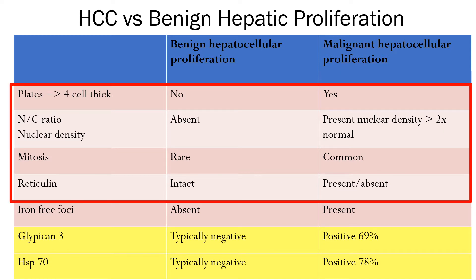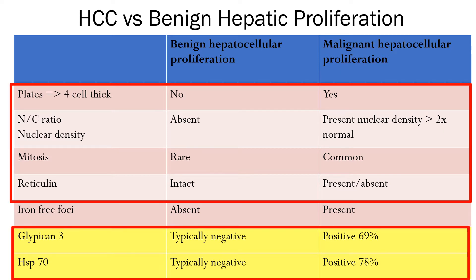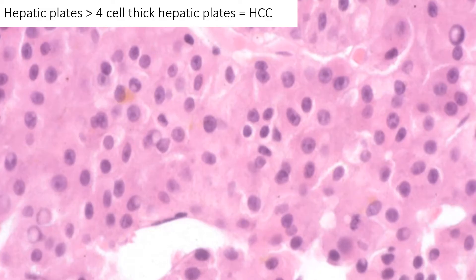The first is your good old H&E. The second is immunohistochemistry. The third antibody, glutamine synthetase, I have not put in there for a very specific reason — we'll get into it. And finally, iron-free foci, but this applies only in the context of hemochromatosis. The easiest feature: hepatic plates that are more than four cells thick is virtually diagnostic of an HCC.